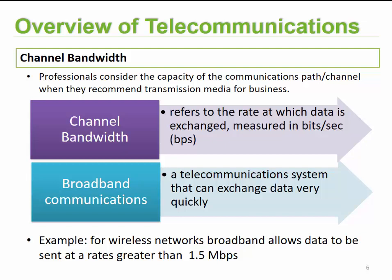Broadband communications refers to telecommunication systems that can exchange data very quickly, typically including mobile and LTE communications. For wireless networks we can send data at rates of 1.5 megabits per second and faster. For DSL and fiber optics, typical speed ranges currently go up to 100 megabits per second. The faster the connection, the more expensive it will be.